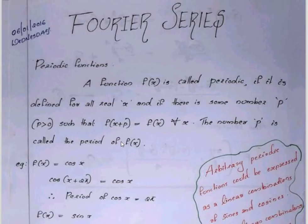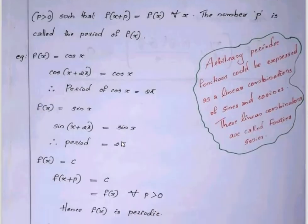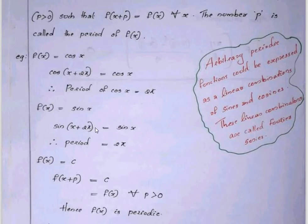For example, cos of x plus 2π equals cos x, so 2π is the period. Similarly, sin of x plus 2π equals sin x, so 2π is also the period of sin x.